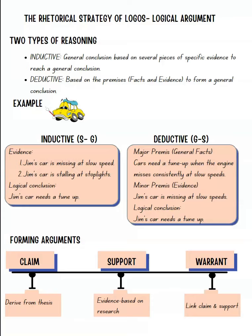Now, how do we form an argument? We have three parts: claim, support, and warrant. The claim is what you say about something — your main point. You then provide support based on your research. The warrant links the claim and the support together.